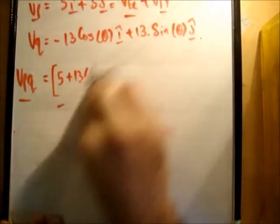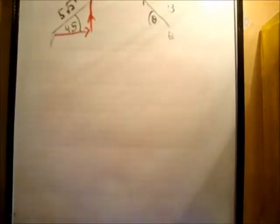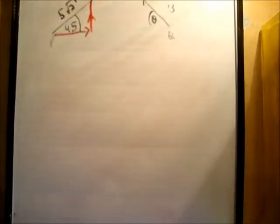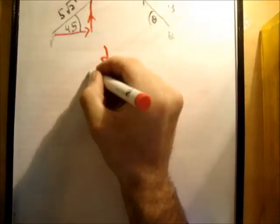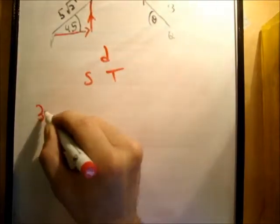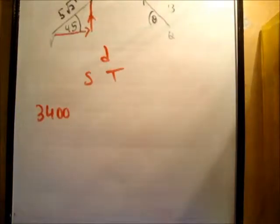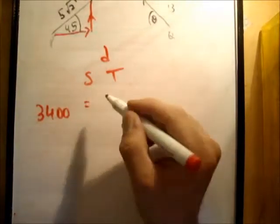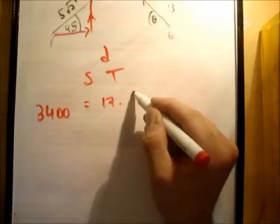So we just need to get how long will it take for VPQ to cover a distance of 3.4 kilometers. So it's distance, speed, time. So 3,400, or that many meters, let's say, is equal to the speed, which I said was 17, times the time.